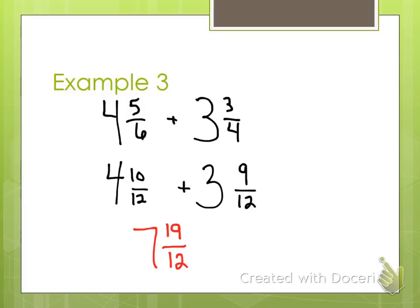Is that my final answer? Why? There's an improper fraction there, so I can take a whole out of it. I know that there's 12 pieces in the whole, so I can take another whole out of it, which makes my whole number 8 with 7 12ths left over. So just make sure that you don't leave your answers improper, that you take that whole out of it and add it to your mixed number.